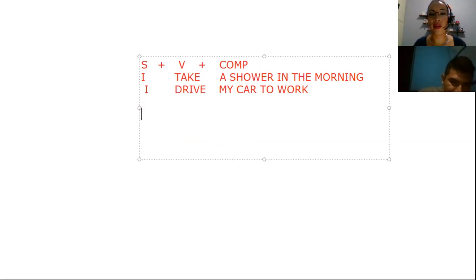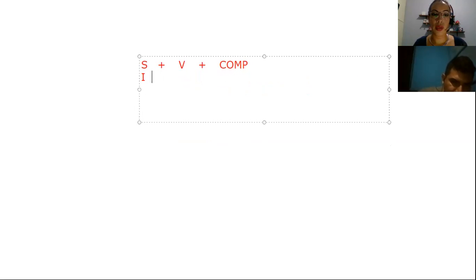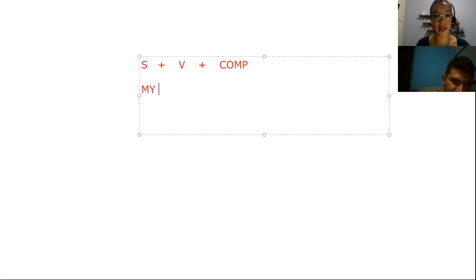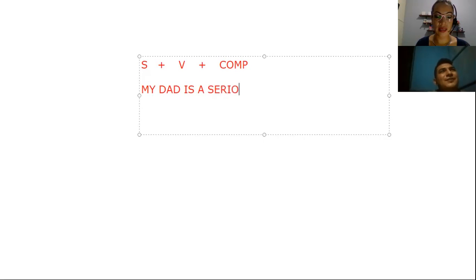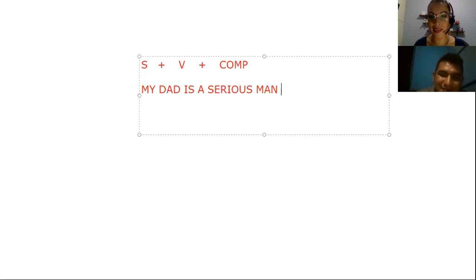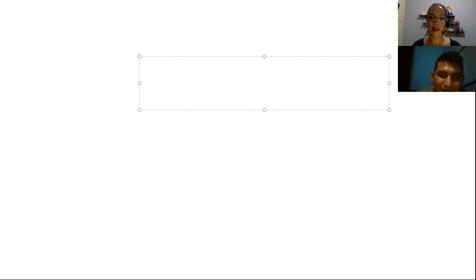For example, if you want to say: my dad is a serious man. The subject can be 'my dad' or 'my father.' The verb here is 'to be' — 'is.' My dad is — the complement is 'a serious man.' How would that be? A serious man. My dad is a serious man. And that's how we can keep practicing and expanding. This requires a lot of practice.